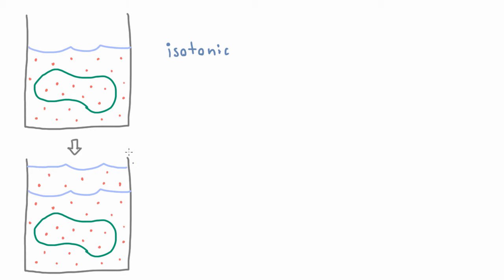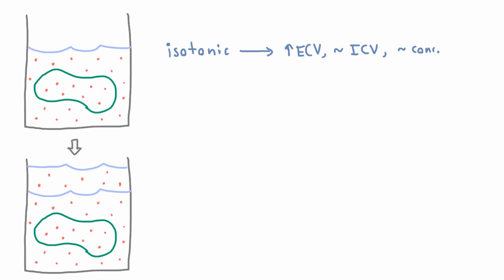If you add isotonic fluid, you get an increase in extracellular volume, and your intracellular volume does not change. Similarly, the concentration of both compartments does not change. So isotonic fluid has the same concentration of salt.